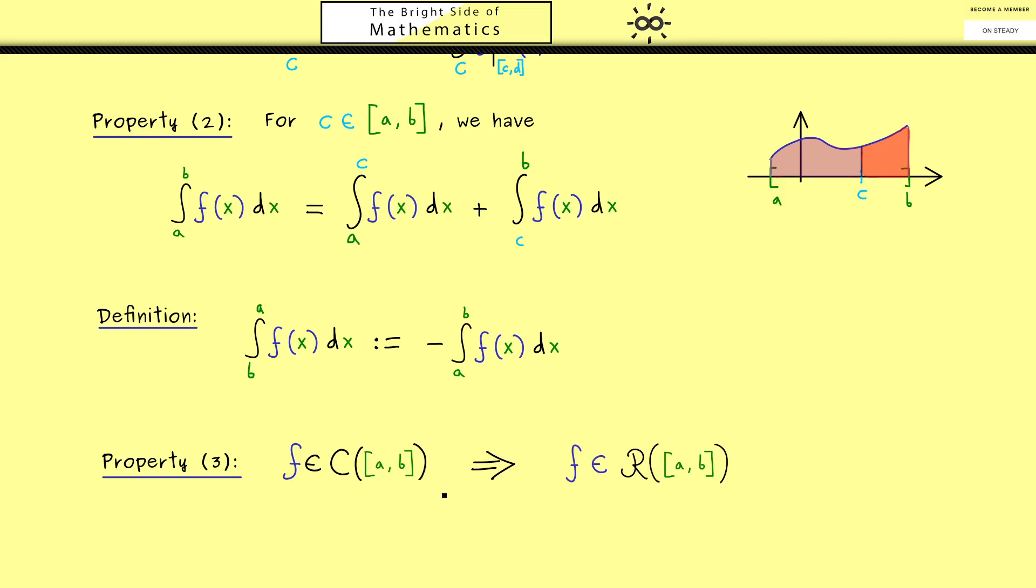This implication here is something you really should remember, because often we deal with continuous functions. In fact, the converse here is not correct. So we have some functions that are not continuous but they are still Riemann integrable. For example, if we have a function defined on [a,b] that is monotonically increasing, then we know it's also Riemann integrable. So you see this is another sufficient condition we have here. And of course, the same implication holds here when we have a monotonically decreasing function.